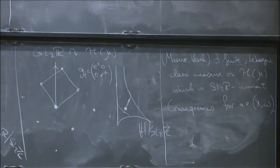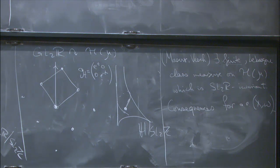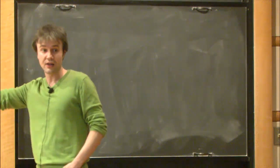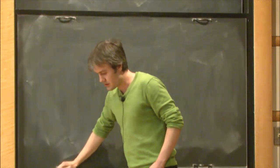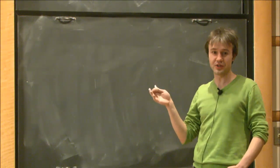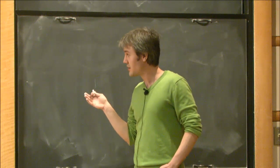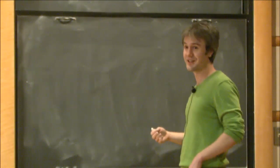The only problem is that, for example, if you're interested in billiards, billiards inside this moduli space are a set of Lebesgue measure zero. Only certain Riemann surfaces come from billiards in polygons—they form a particular smaller-dimensional subset of the moduli space. Just as one can say almost every real number has equal frequency of digits, nobody can say the same thing about π specifically.